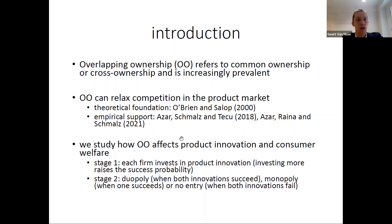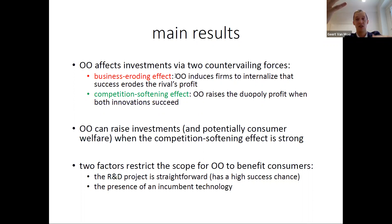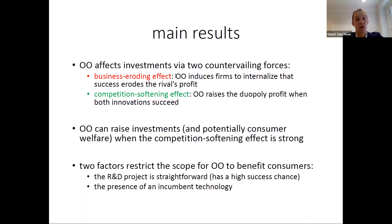There are two opposing effects. The first is the familiar business-eroding effect: if a firm succeeds, it becomes an extra competitor, hurting the rival's profit. Through overlapping ownership, firms internalize this effect — my own success hurts the rival — leading to a reduction in R&D investments.